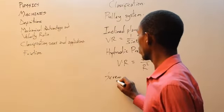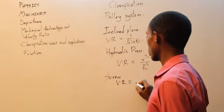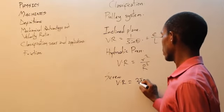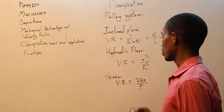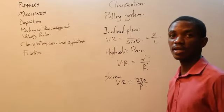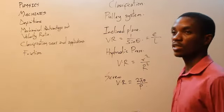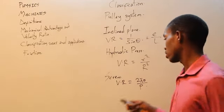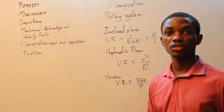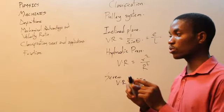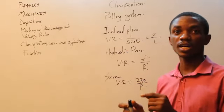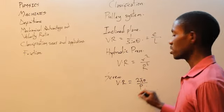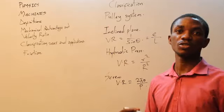In the screw, the velocity ratio is calculated by 2 pi A over P, where A is the arm length of the screw and P is the pitch. A is the arm length — or height — of the screw teeth, and P is the pitch of the screw.